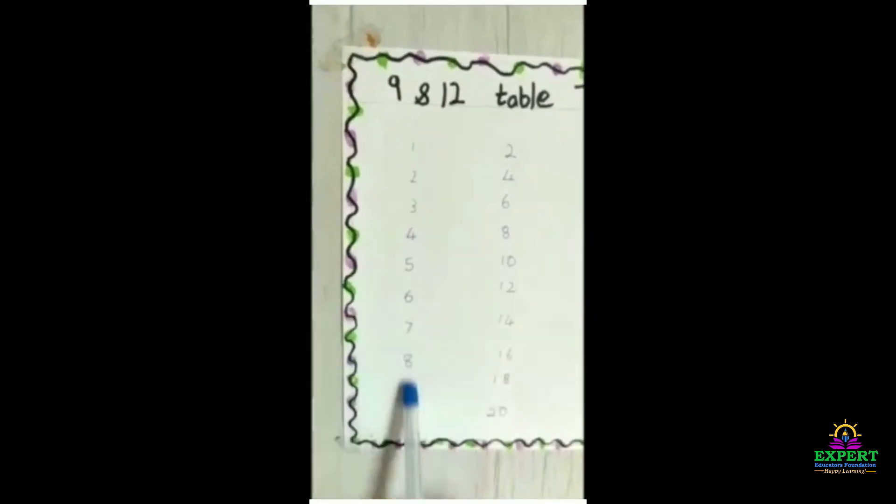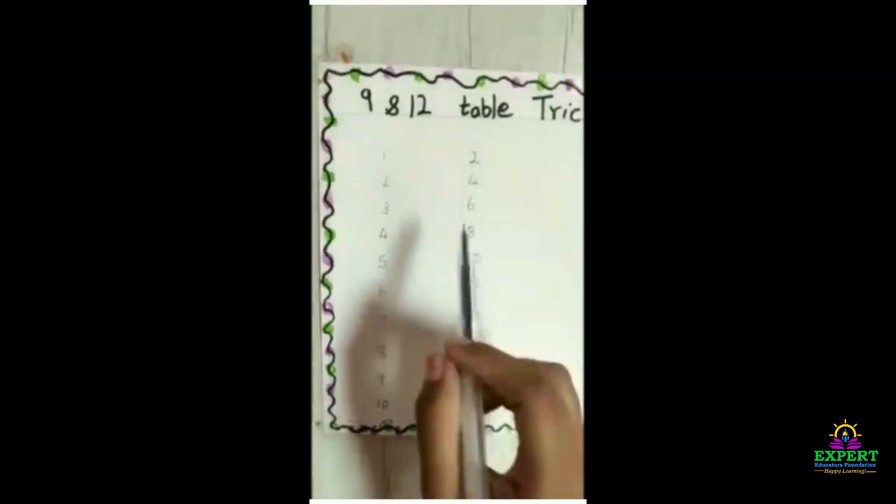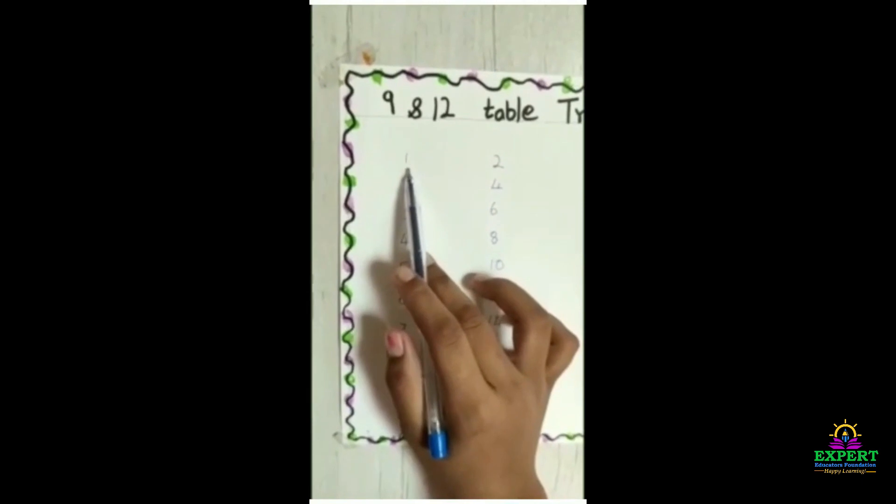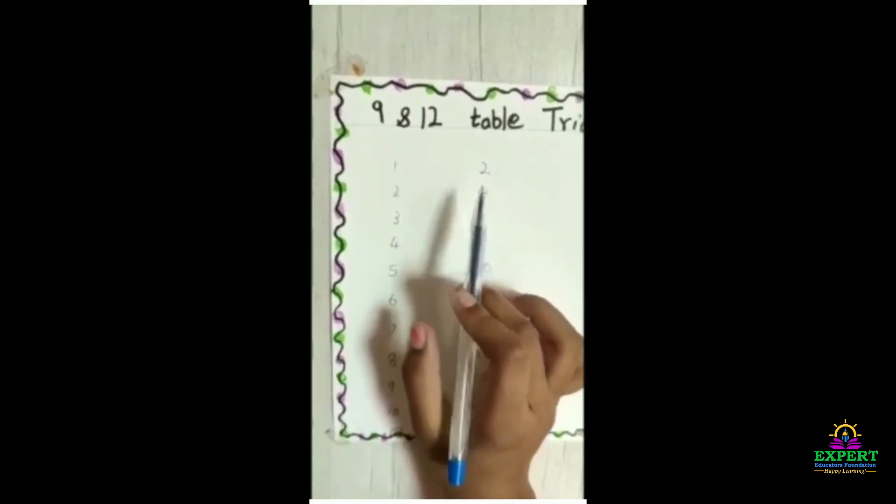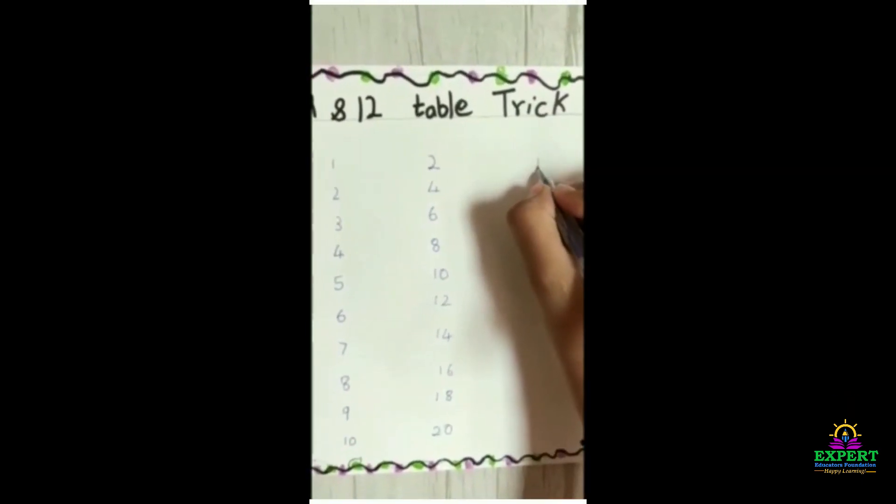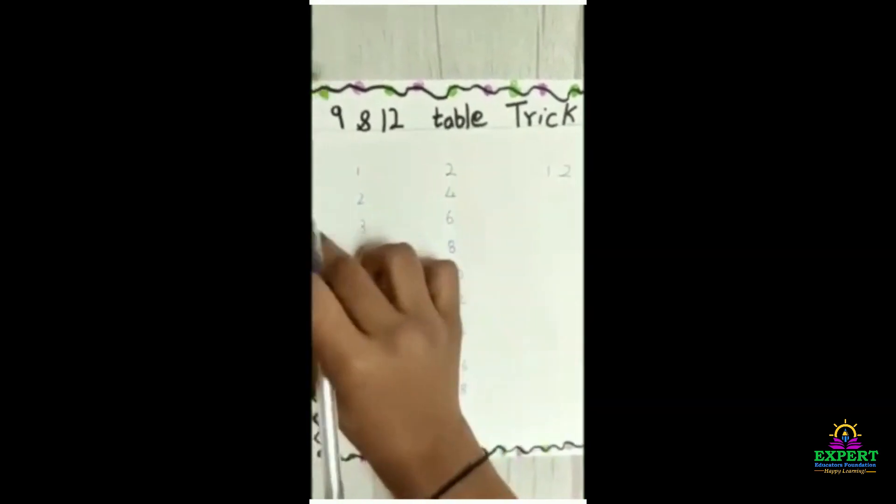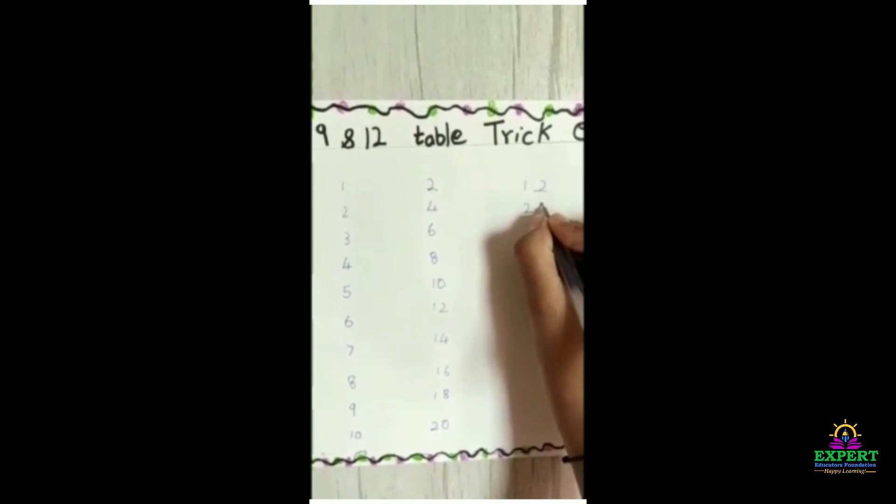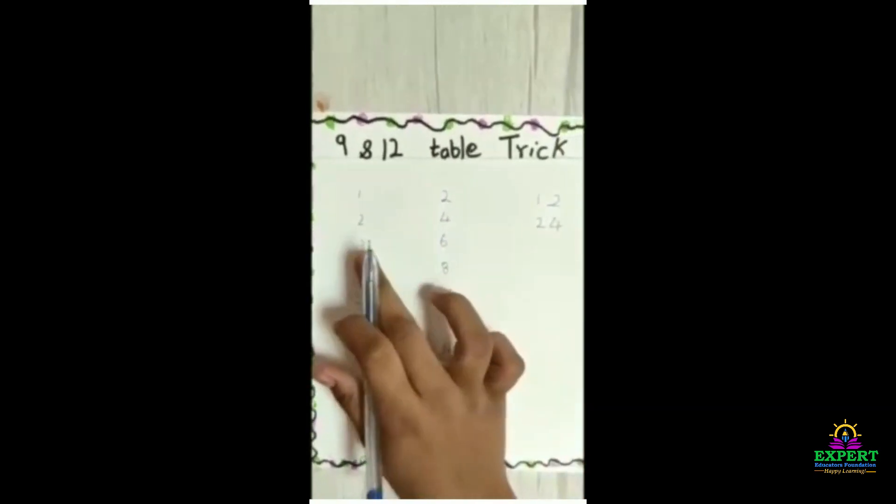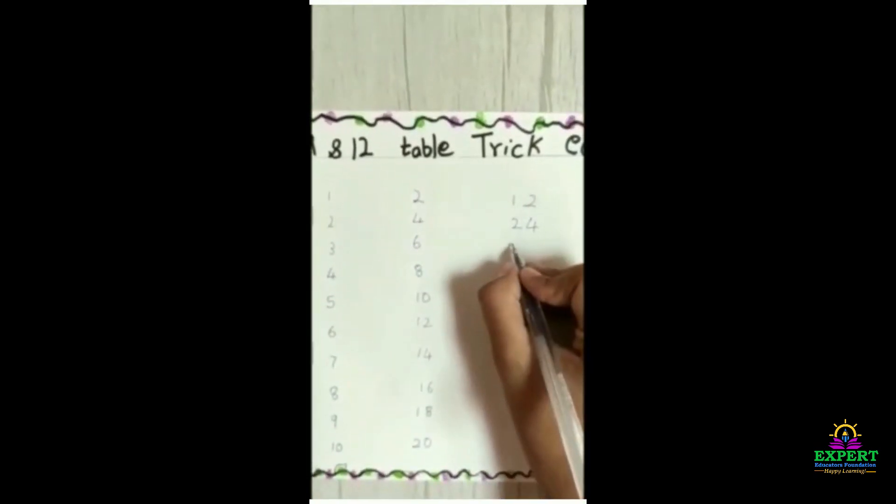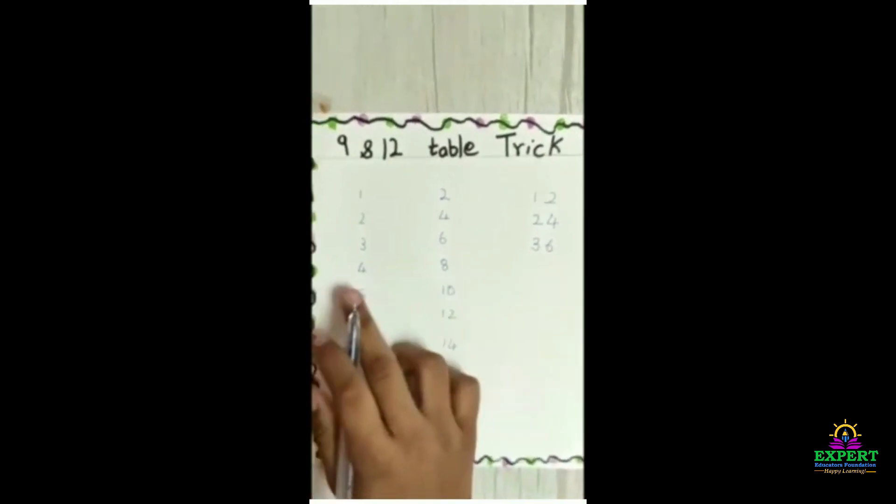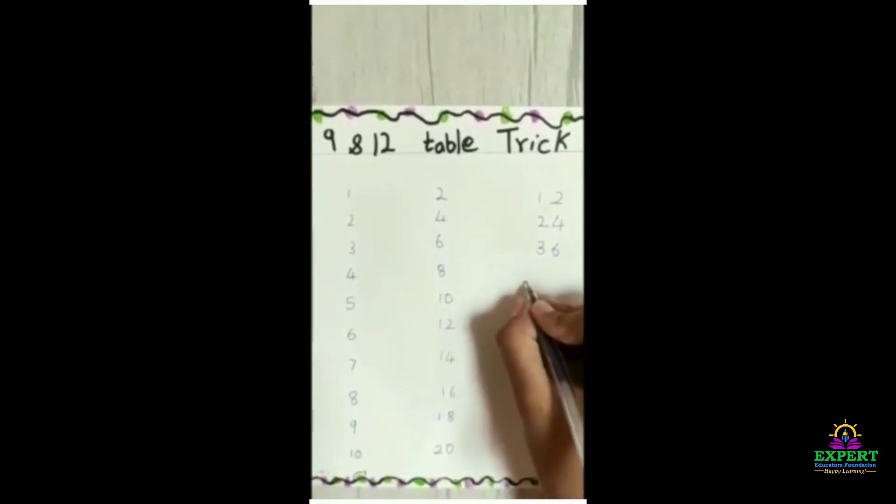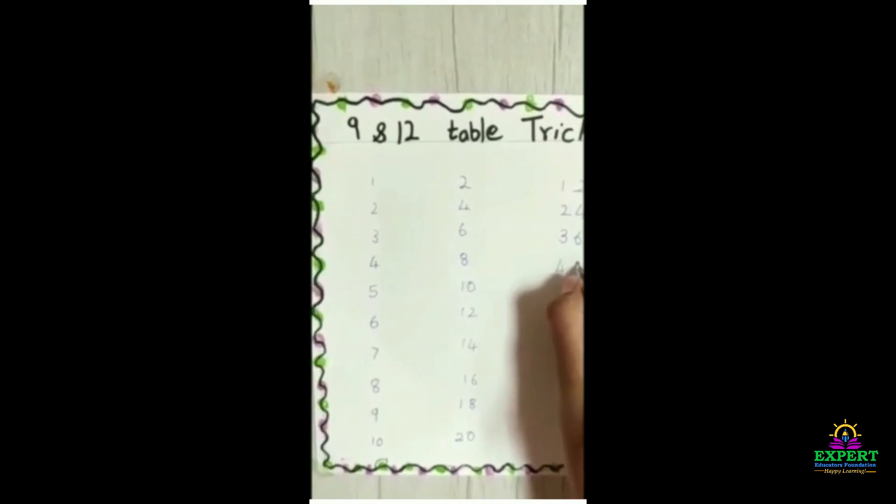So, we have written the table of 1 and 2. We have to add them. 1 and 2 is 12. 2 and 4 is 24. 3 and 6 is 36. 4 and 8 is 48.